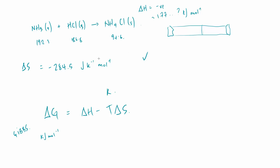This equation ties in enthalpy change, temperature, and entropy change. If we find a negative value for delta G, the reaction is feasible. If we find a positive value, the reaction will not happen. A negative delta G means feasible; a positive delta G means not feasible.